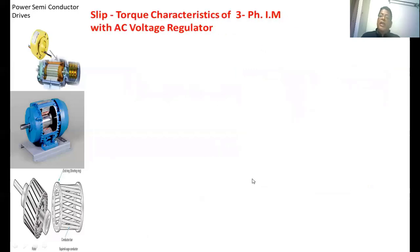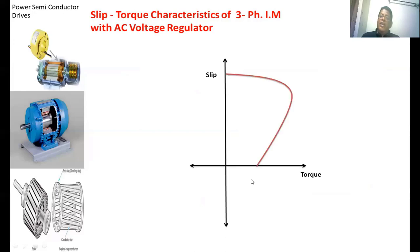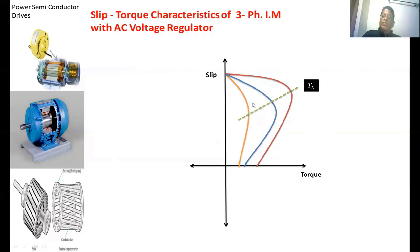Now we look at the slip-torque characteristics of a three phase induction motor with AC voltage control. On the x-axis we have torque and the y-axis we have slip. This shows the speed-torque characteristics for rated voltage, reduced voltage, and further reduced voltage. A load torque line intersects the three slip-torque characteristics at different points. As the voltage decreases, the slip of the induction motor increases, meaning the speed of the motor decreases. By applying variable voltage to the induction motor, the speed can be varied, but the rotor losses increase. This type of stator voltage control is suitable for domestic fans and pumps.